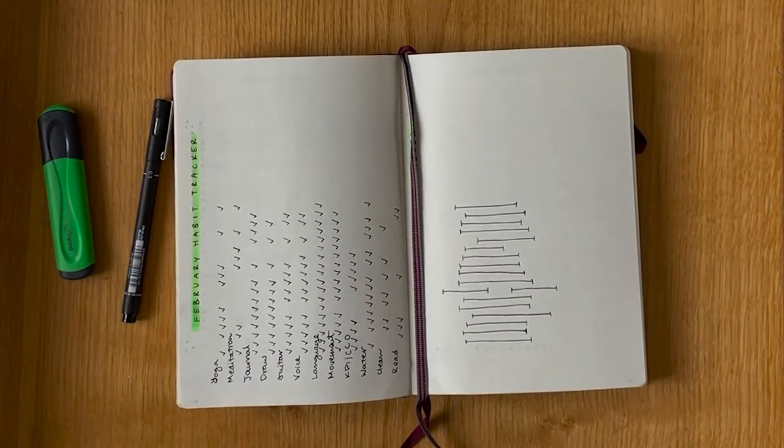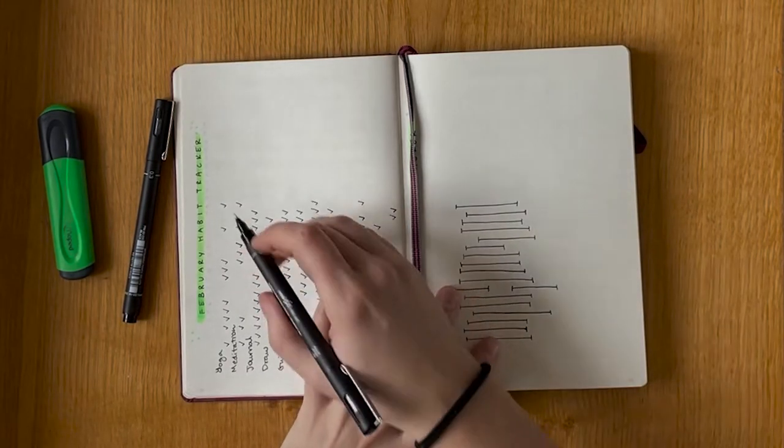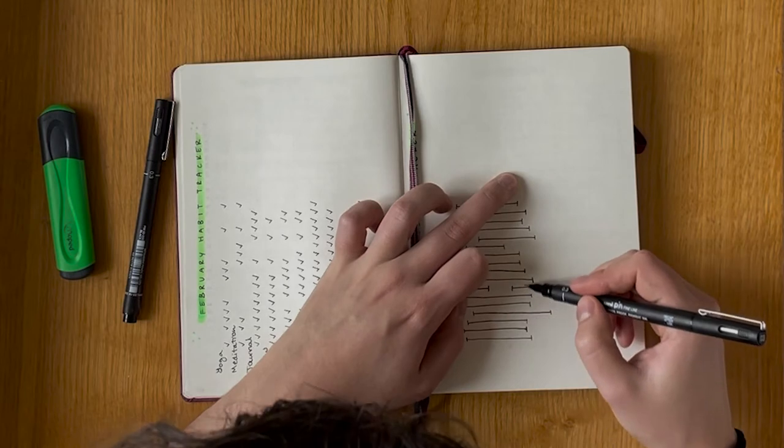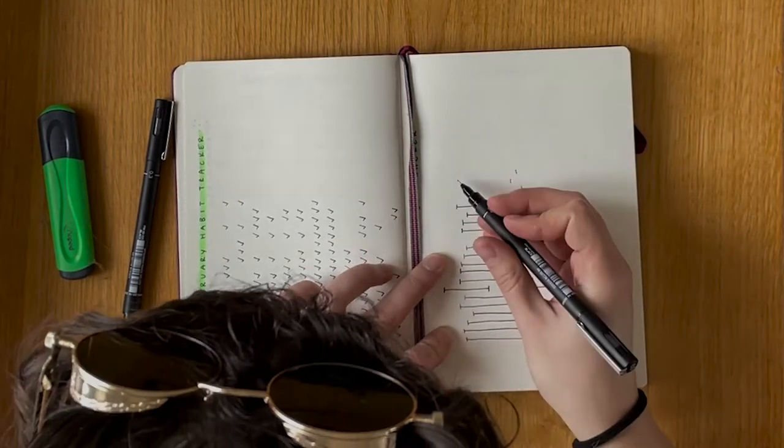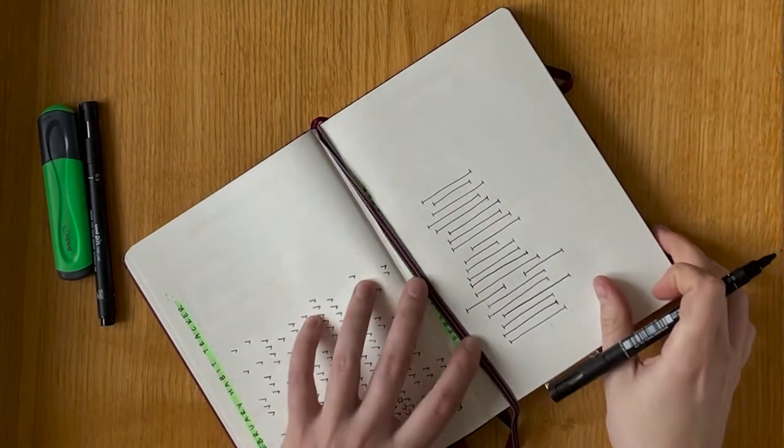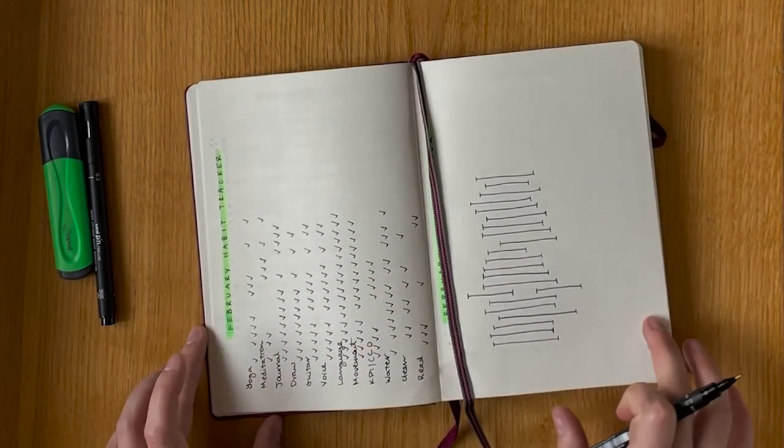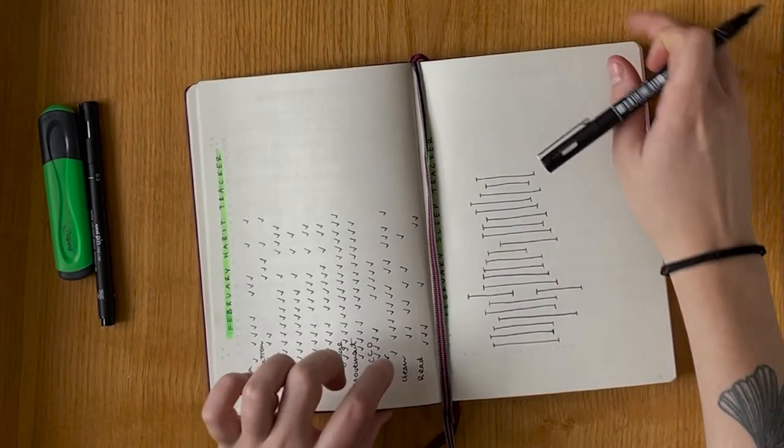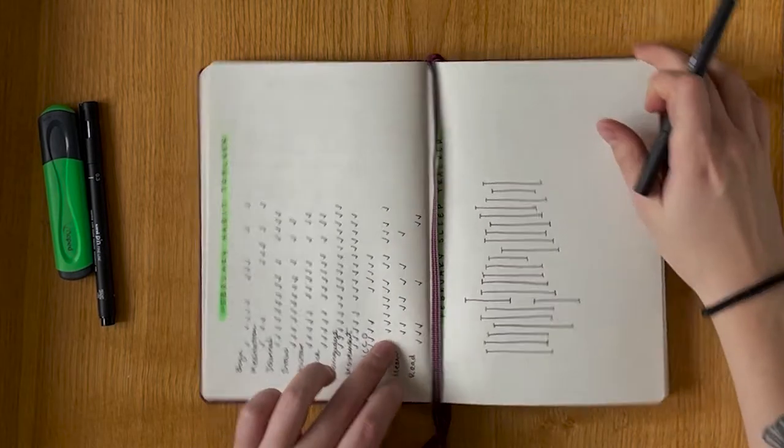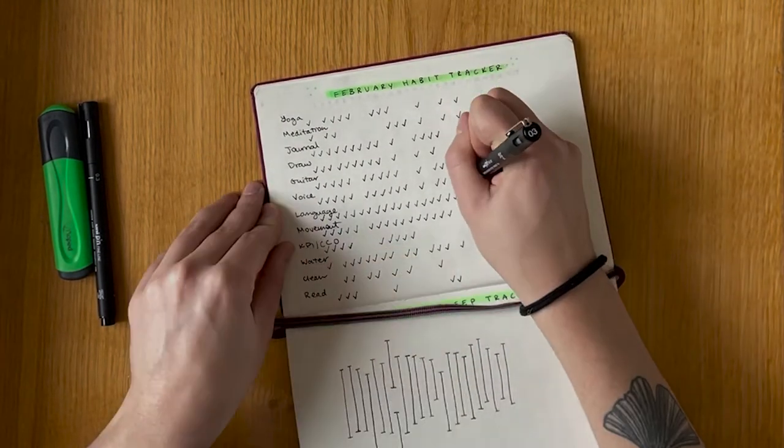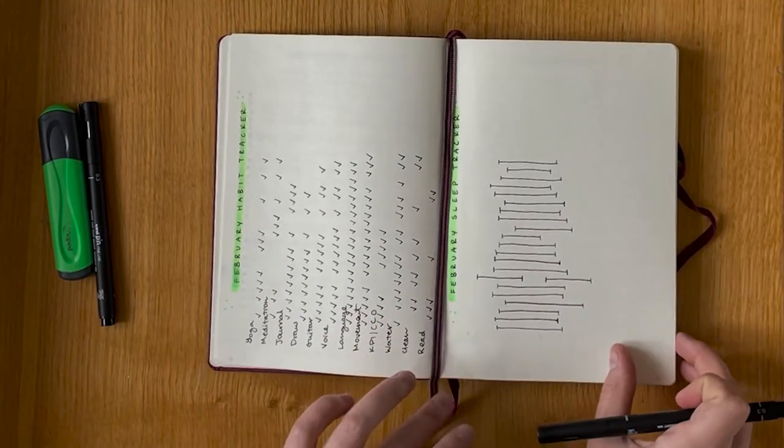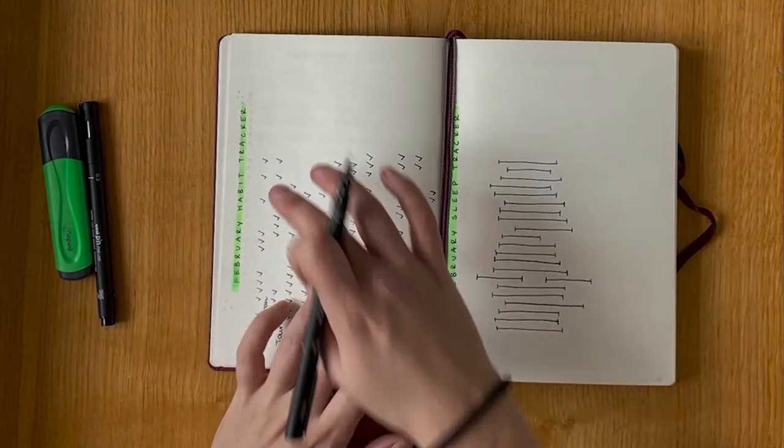So the first thing for me to catch up on is my habit and sleep tracker. Today is the 21st, so I find this line and I'll backtrack from there. On the 21st today I woke up at like 7:30. Tracking my sleep has been extremely helpful for me, especially since I have been doing so well with my sleep. It's very good to see. This is a very good month for me essentially. Okay, and let's catch up on my habits. So yesterday was the 20th. I know I did yoga, meditation. So now I have my habit and my sleep tracker filled out and caught up.